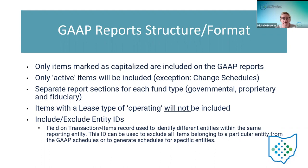Districts will have a lot of items that aren't capitalized — they're just keeping them for tracking purposes. Those items will not be included on the report. Only active items are included. Active means the status is active, new, excess asset for sale, or excess asset not in use. Those are the four types considered active. One exception: the change schedules are going to include disposition transactions, so items disposed of during the year will appear on those reports. The other reports include only active items.